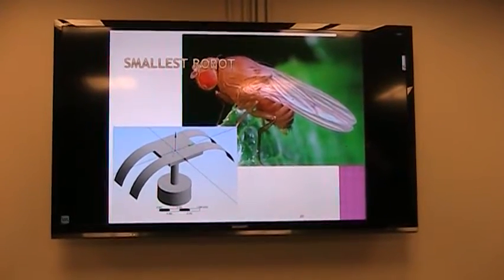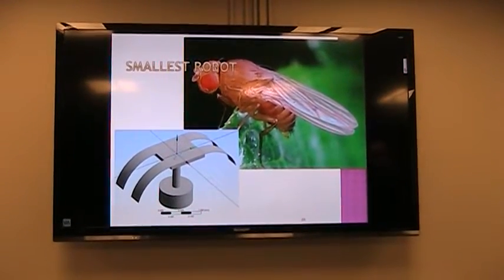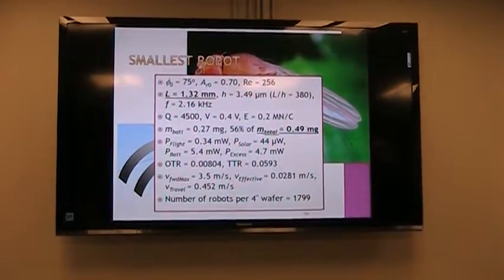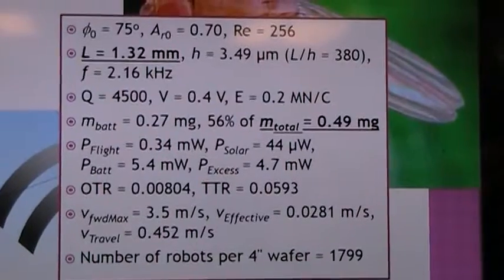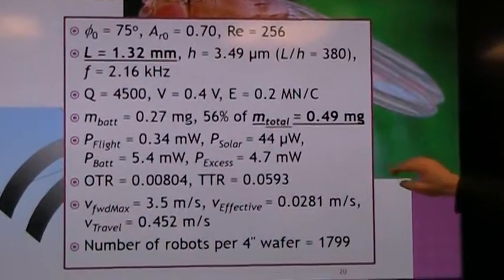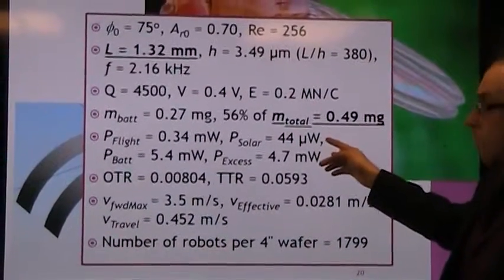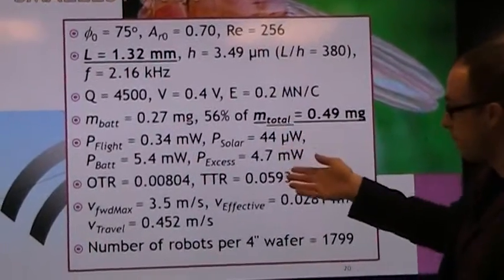The smallest robot is about the same size as a fruit fly, a little bit shorter wings actually, length of 1.3 millimeters. And we're ending up with 0.4 milligram mass. This robot has a fair bit of solar power for the amount of power that it's needing.